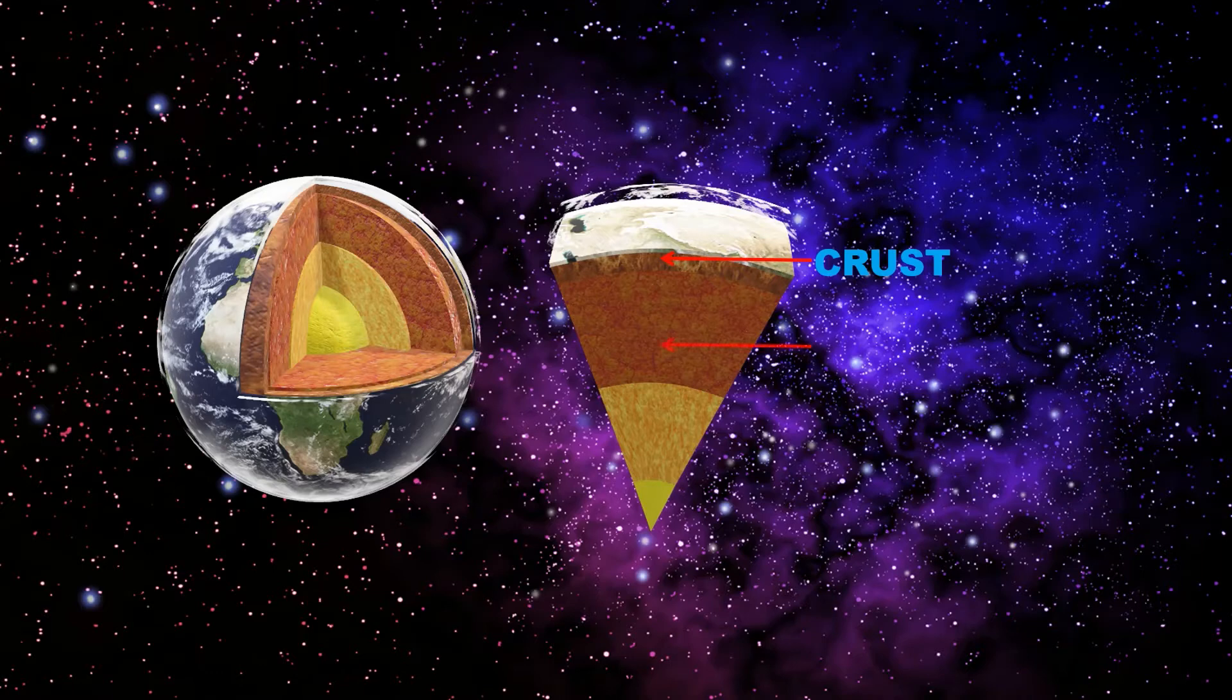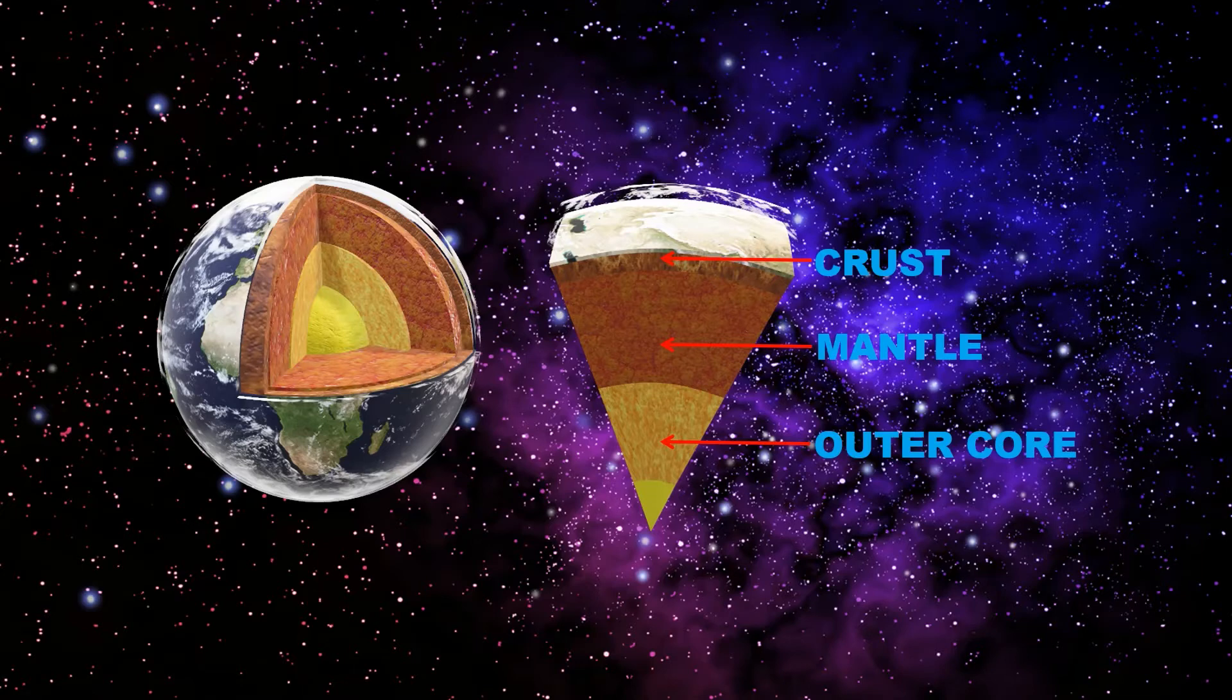Inside the crust, the mantle is a hot viscous mix of molten rock about 2,900 kilometers thick. Volcano eruption occurs from mantle. Inside mantle, the outer core is about 2,250 kilometers thick and composed of molten iron and nickel metals. The inner core is roughly 1,221 kilometer thick solid sphere of iron and nickel metals and is hot as the sun's surface.